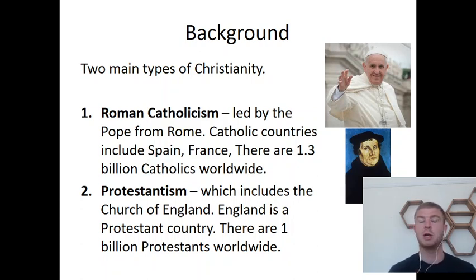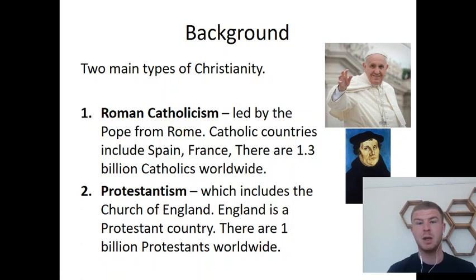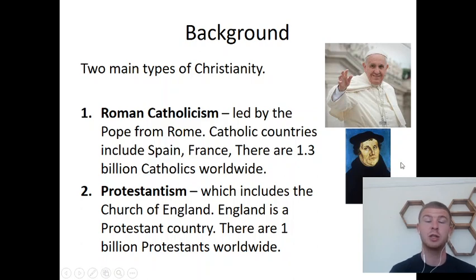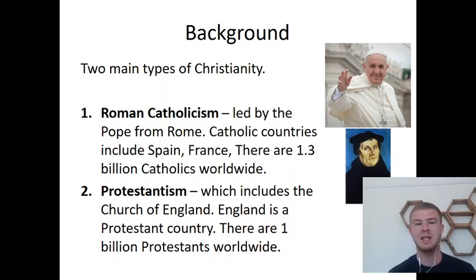There are others, but the two main types are Roman Catholicism. That picture is Pope Francis, and he is in charge of Roman Catholicism — he's the Bishop of Rome. He lives in the Vatican in Italy and is the head of the Catholic Church. There are loads of Catholic countries like Spain and France, and it is the biggest denomination, the biggest type of Christianity in the world, with 1.3 billion Catholics. The other main type is Protestantism, which comes from the word protest. It was before that everybody used to be Roman Catholic. England is still a Protestant country, and there are 1 billion Protestants worldwide.